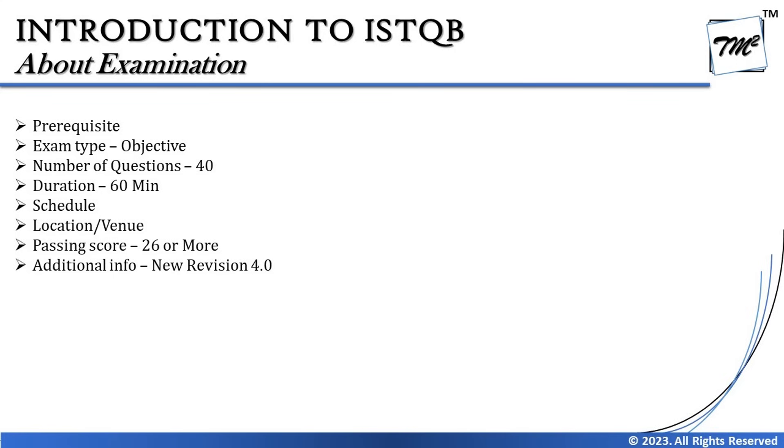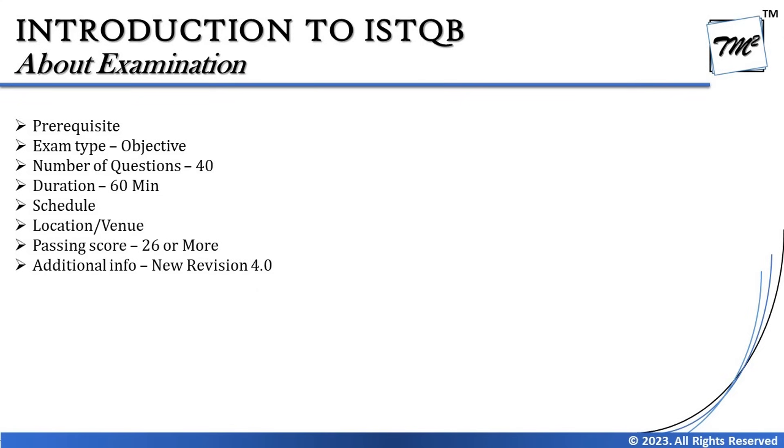The duration provided is 60 minutes — one hour to write 40 answers. If you're in a country where the primary spoken language is different from English, you get an additional 25% of time, which is 15 minutes extra, making it 75 minutes total. I generally don't mention this at the beginning because people start treating 75 minutes as the default, but it's important to know upfront: you have plus 15 minutes if your primary language is not English.